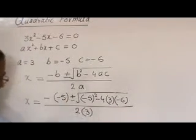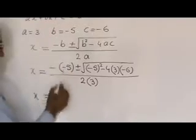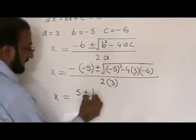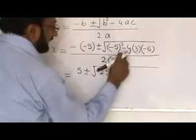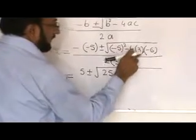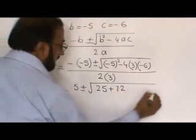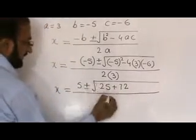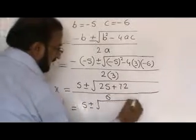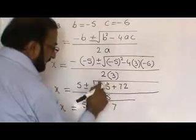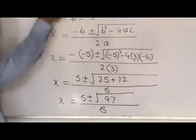Simplifying: x = (5 ± √(25 + 72)) / 6, which gives x = (5 ± √97) / 6.